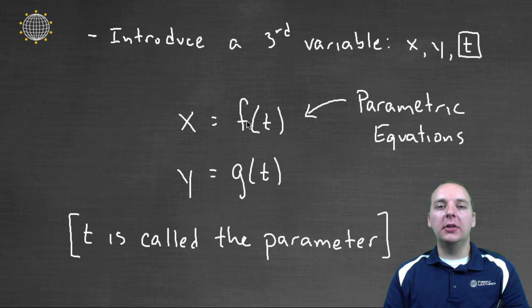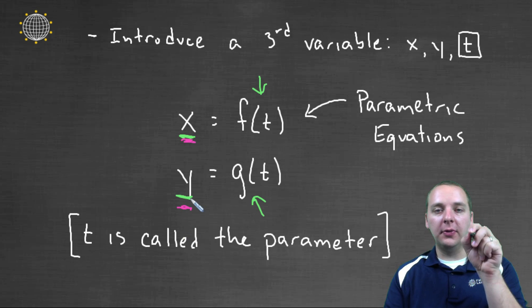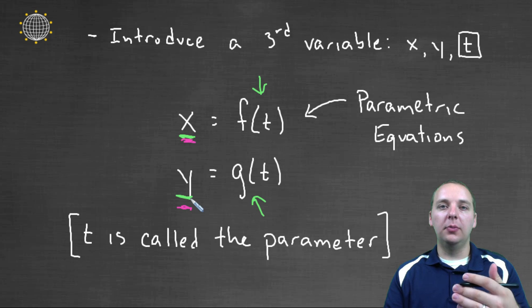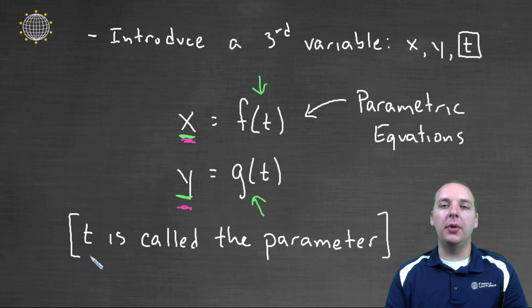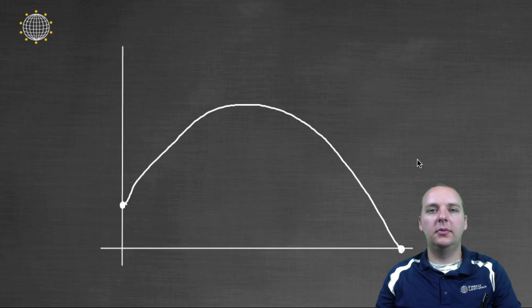So the x will be a function of time and the y value will be a function of time. So when you pick a time, let's say two seconds, you would plug two into f and you would plug two into g and that would give you an x, y location. And then you change time to be three seconds. You would get a different x, y location. And so as time changes, you sketch out this curve that's oriented because time always increases from zero seconds on. And t usually is called the parameter.